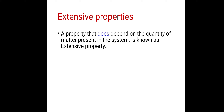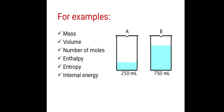Initially there is some quantity, then we add more quantity, and they get added. So extensive properties are additive properties. For example: mass, volume, number of moles, enthalpy, entropy, internal energy.